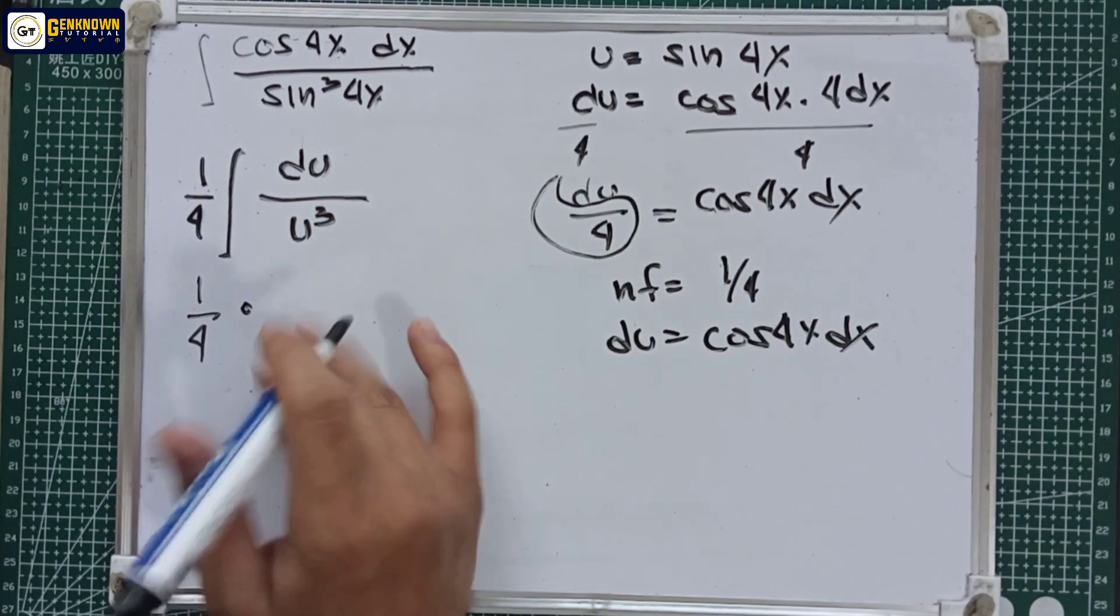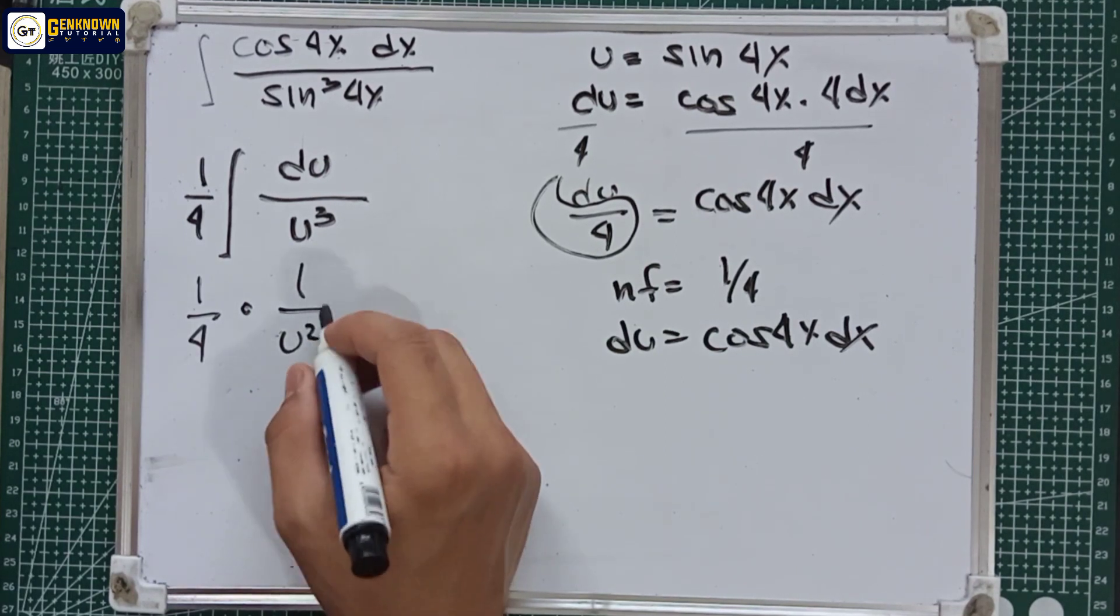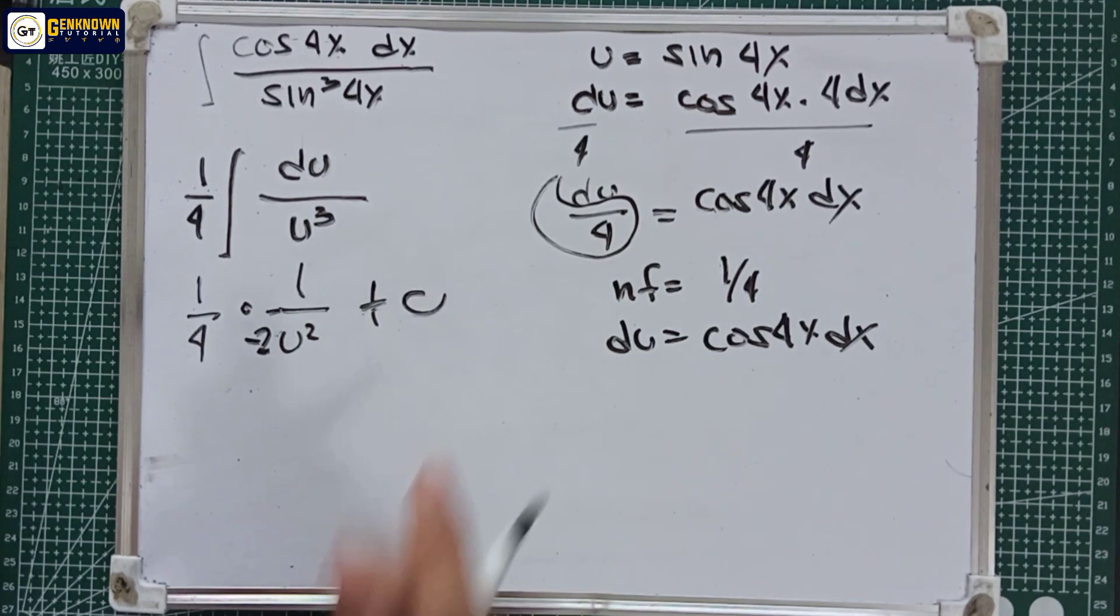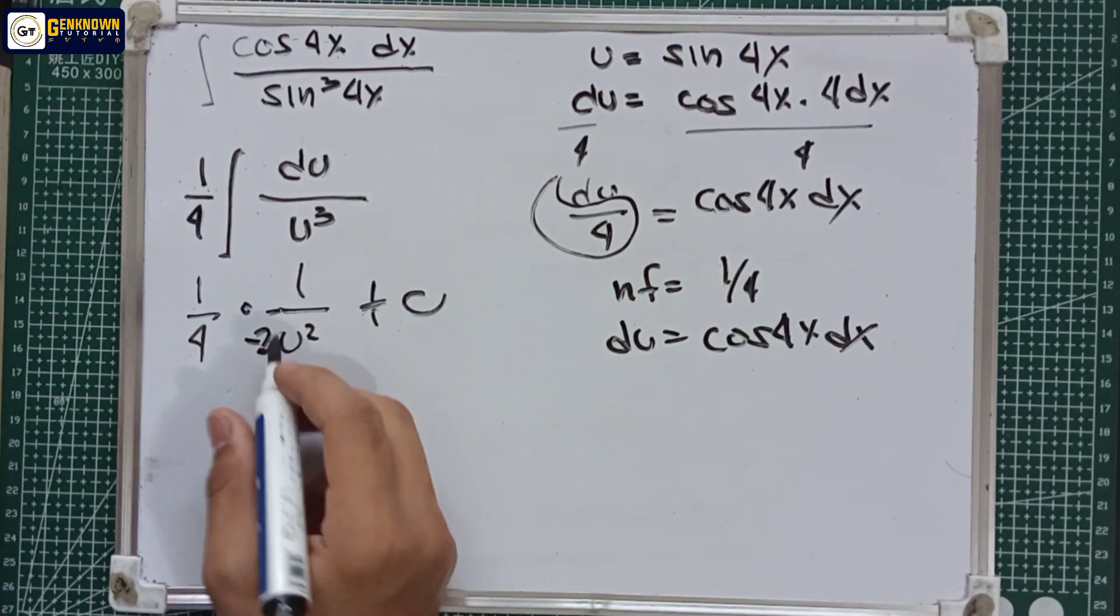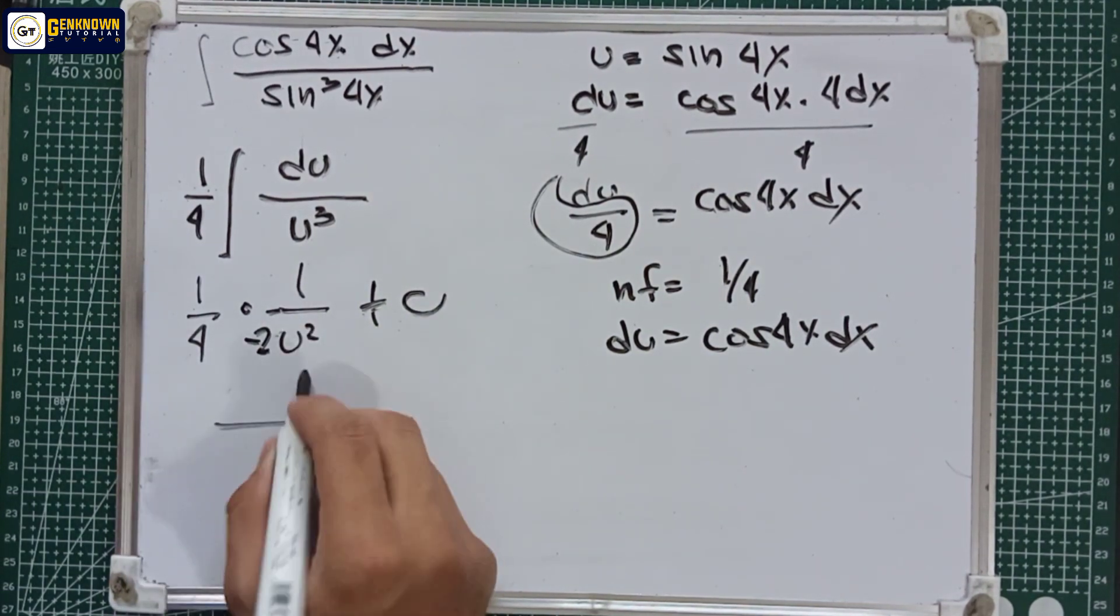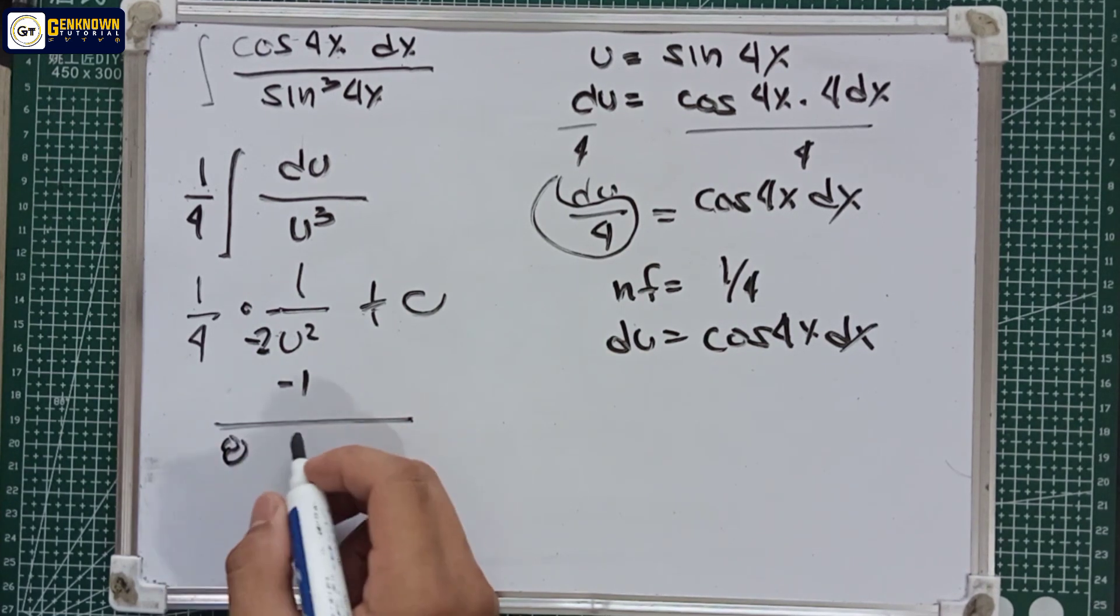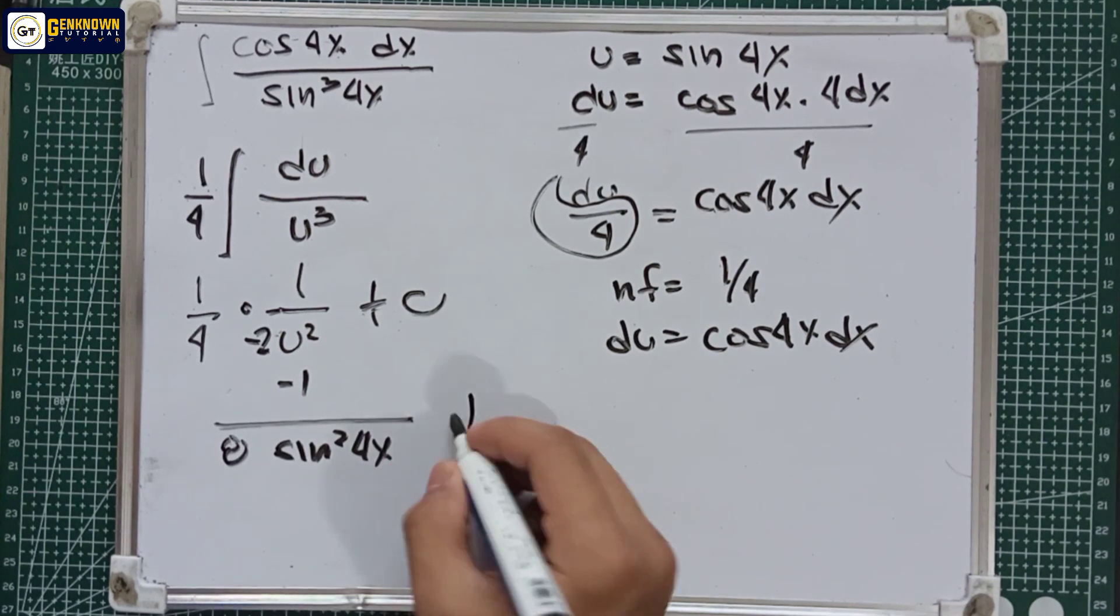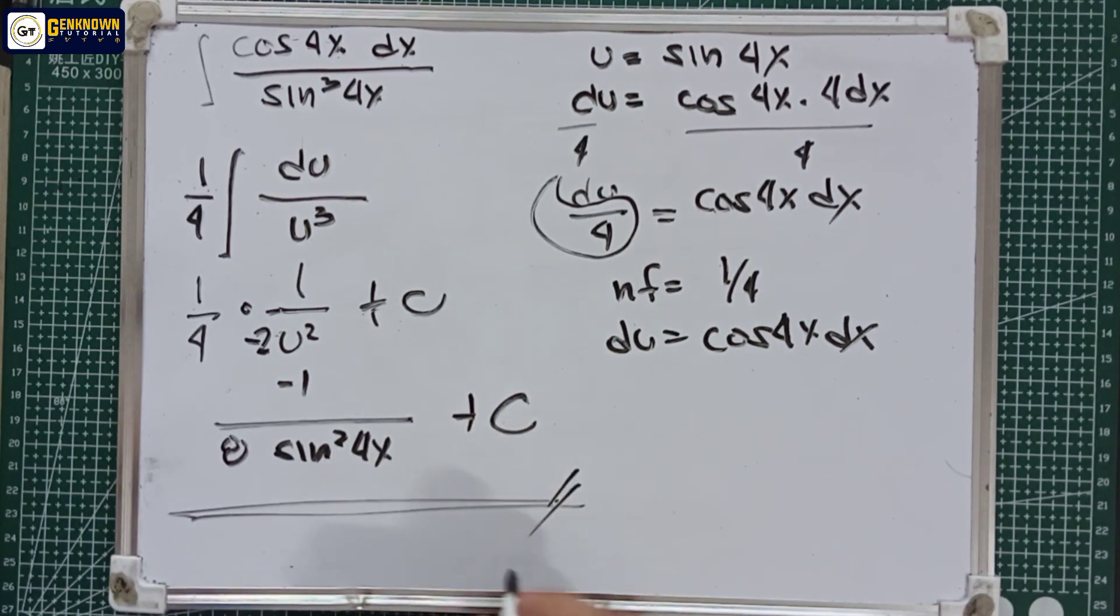That's 1 over u squared, multiplied by negative 2, plus the constant. One-fourth times negative one-half is negative one-eighth. So the final answer is negative 1 over 8 u squared, which is negative 1 over 8 sine squared 4x plus C. This is the answer to number 16.